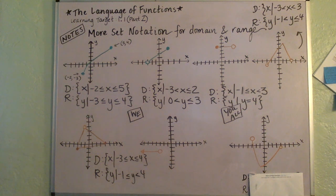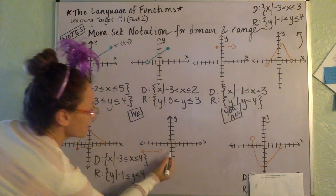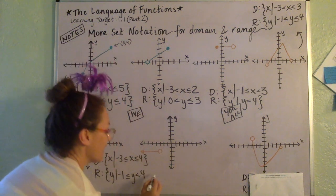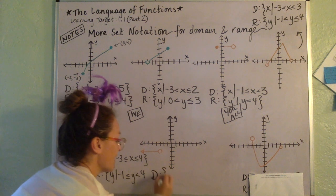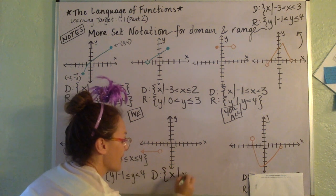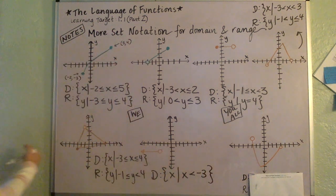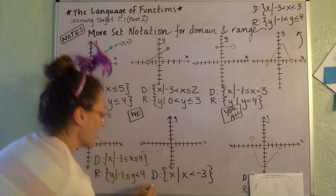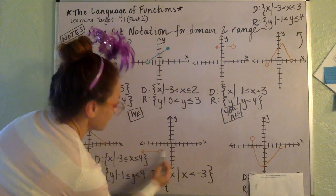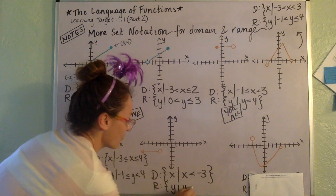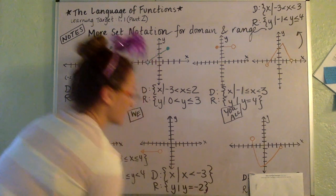Let's take a look at the 'we' problem together. It looks like it's a flat line at y equals negative two, and it's from negative three and less than that. So for our domain, it's going to be x is less than negative three — from negative three and less. And then for our range, it's just a flat line at y equals negative two, so we say y such that y equals negative two. It's just negative two.